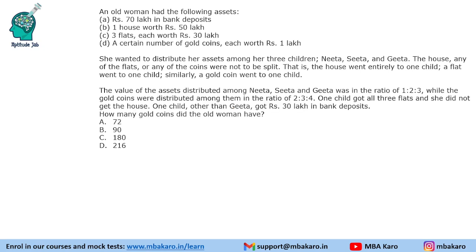For the next couple of questions, the last part of the data has changed. The value of assets distributed among Nita, Sita and Geeta was in the ratio 1:2:3, while the gold coins were distributed in the ratio 2:3:4. One child got all 3 flats and did not get the house. One child other than Geeta got 30 lakhs in bank deposits. We need to find how many gold coins the old woman had. Let us rebuild the table with this modified information: bank deposit, house, flats, and gold coins for N, S, and G.